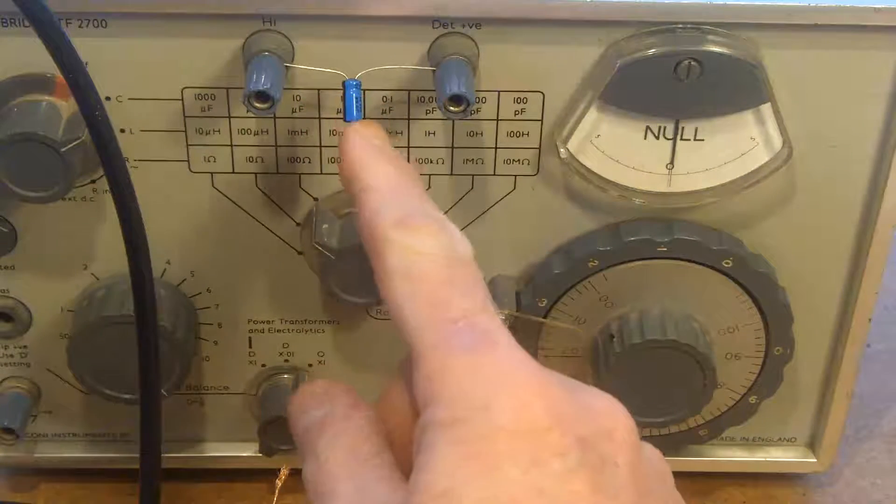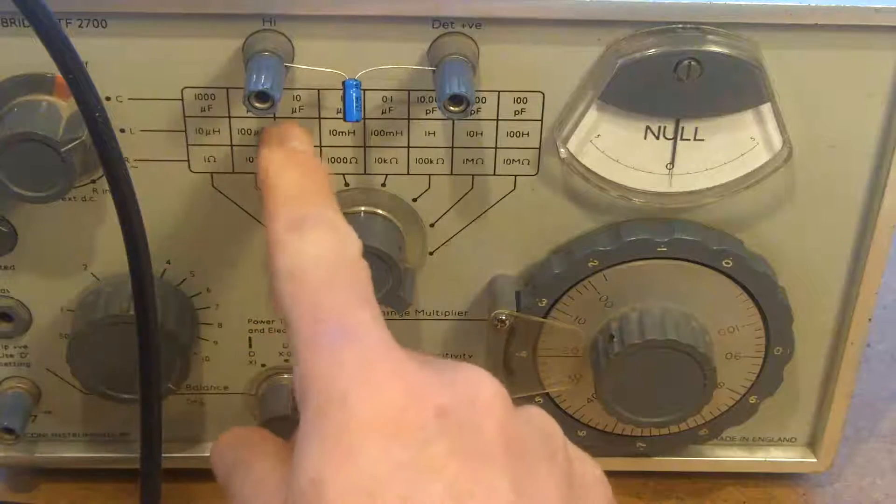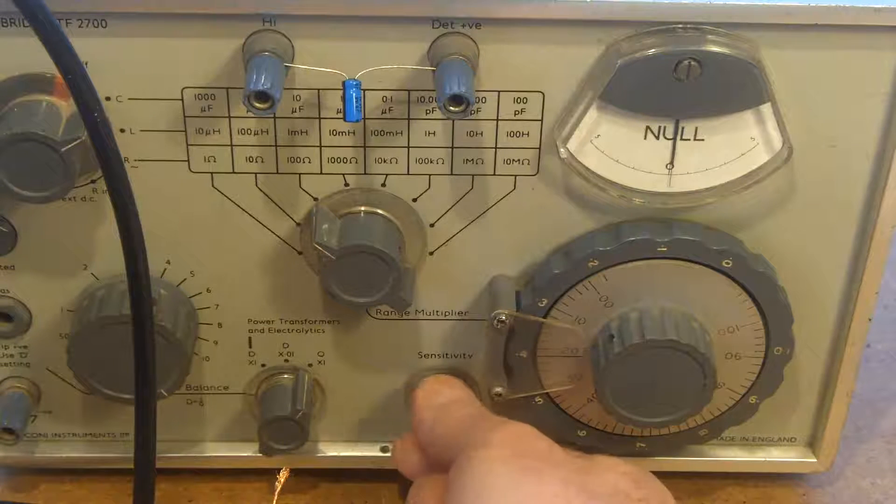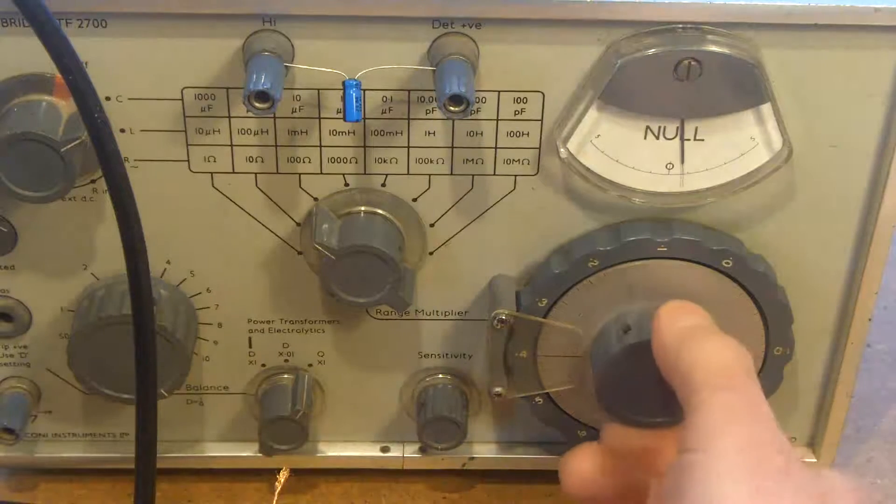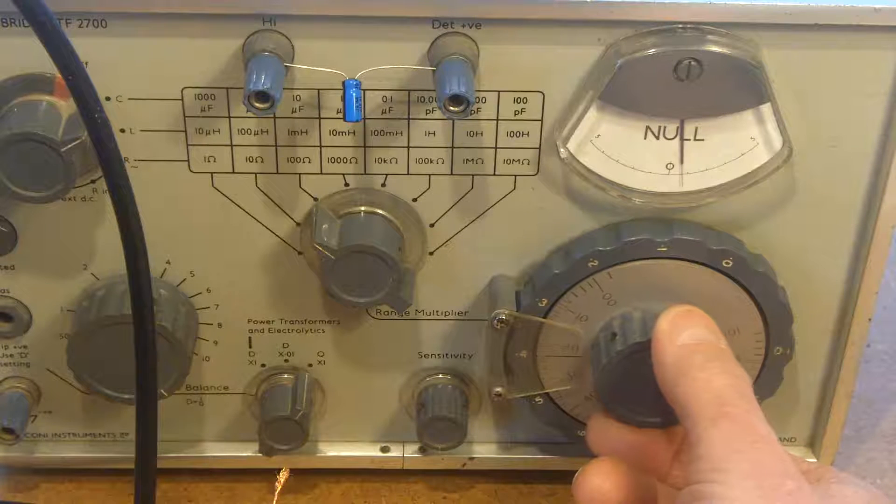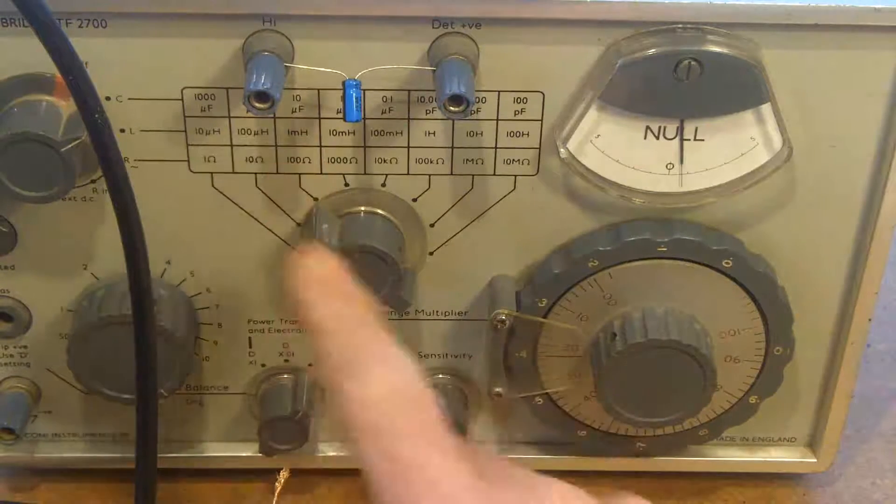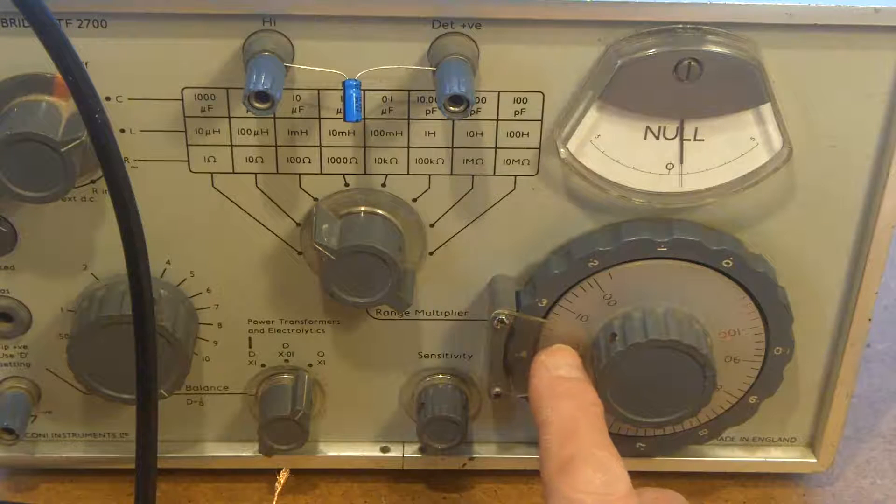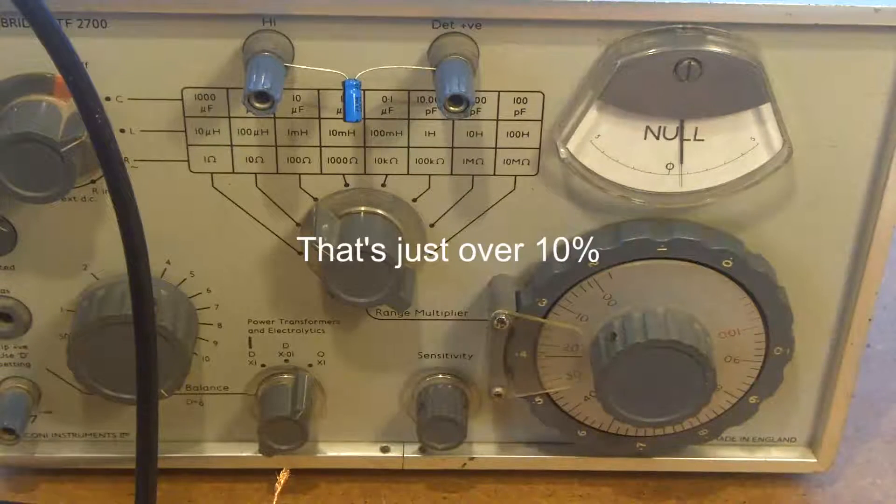Well, I've just put a 4.7 microfarad capacitor on here, and again, I'm on the 10 microfarad range. That's balanced out there. Give it lots of sensitivity. There, and that's balanced out there. And that's coming in at 10 times 0.42, so that says that's 4.2 microfarads, so you know, 4.7, 4.2, no big deal.